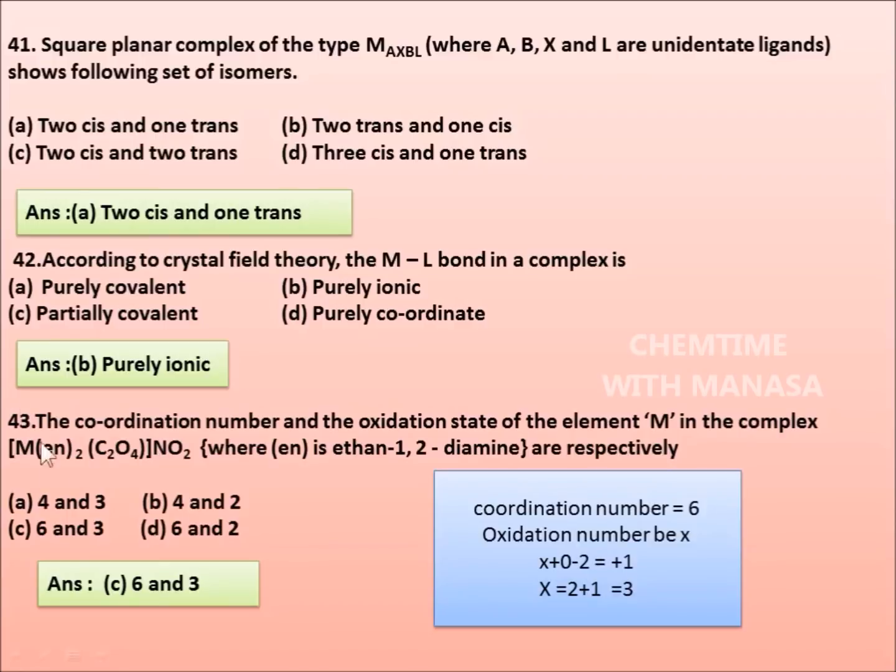Because here M is attached to 3 ligands: 2 EN and 1 C₂O₄. Both C₂O₄ and EN are bidentate ligands, meaning they form 2 bonds with the central metal atom. So 3 bidentate ligands means totally 6 bonds, or coordination number of M is 6. Then oxidation state of M: the coordination entity is attached to NO₂⁻, so charge on the coordination entity is +1. X + 0 - 2 = +1, so X = 2 + 1 = 3. Coordination number is 6 and oxidation number is 3, so option C is the correct answer.